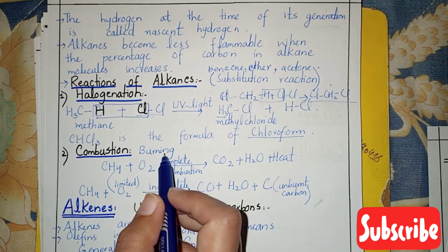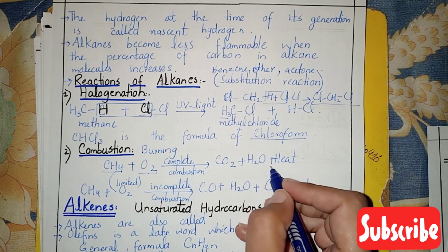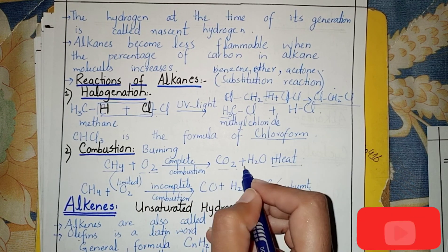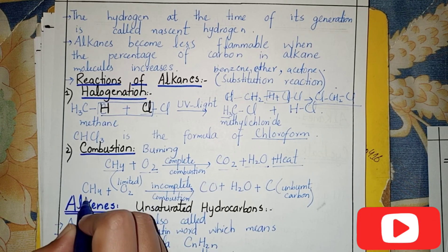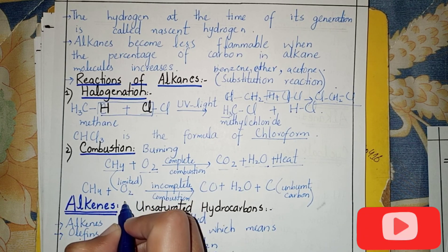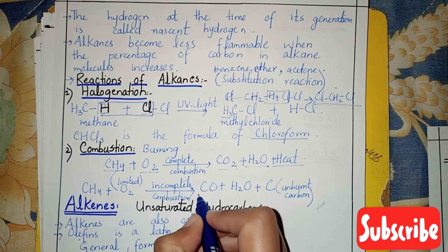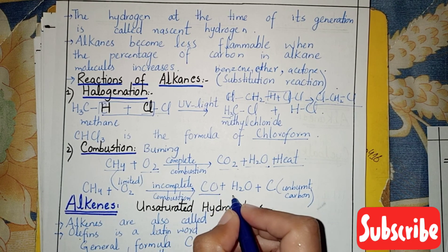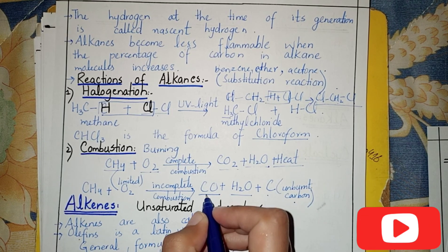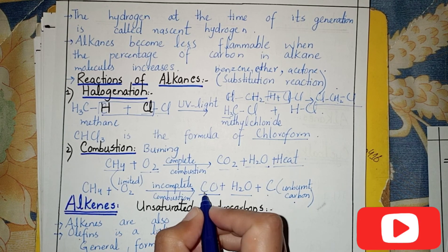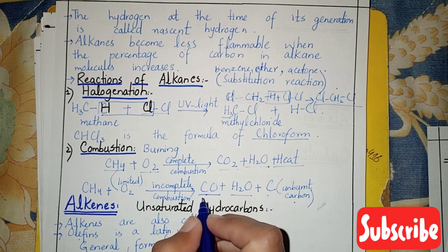Combustion is commonly called burning. When methane combines with excess oxygen, it produces heat, carbon dioxide, and water — this is called complete combustion. When methane combines with limited oxygen, incomplete combustion occurs, forming carbon monoxide, water, and unburnt carbon. Carbon monoxide is a poisonous gas which creates suffocation and causes death.